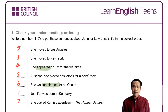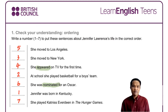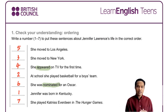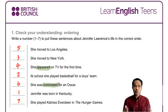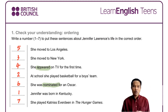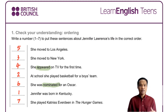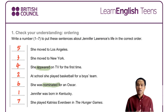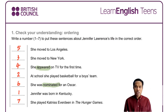This is the exercise — I want you to put the sentences in the correct order. We have number one to number seven but the sentences are mixed up. Number one: Jennifer was born in Kentucky, USA. Number two: at school she played basketball for a boys' team. Number three: she moved to New York. Number four: she appeared on TV for the first time. Number five: she moved to Los Angeles. Number six: she was nominated for an Oscar. Number seven: she played Katniss Everdeen in The Hunger Games.